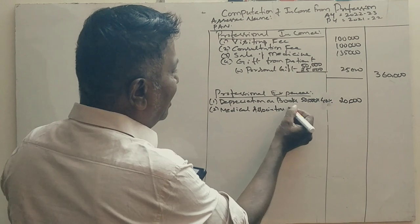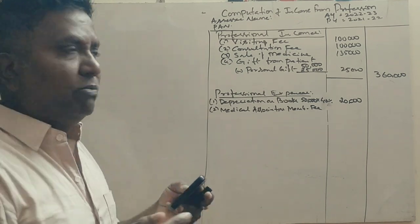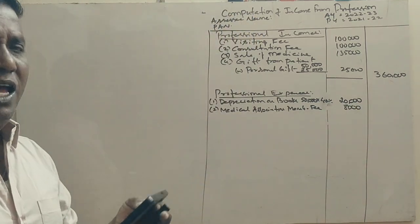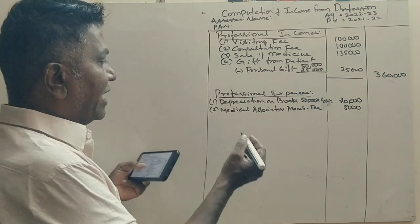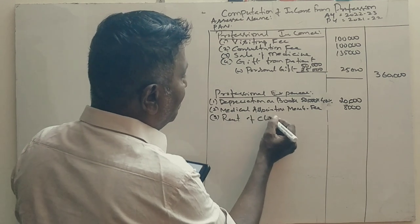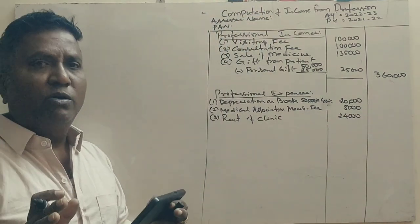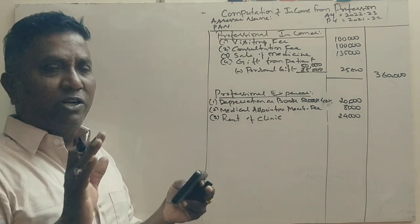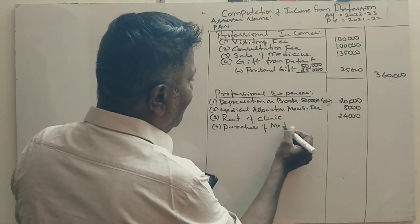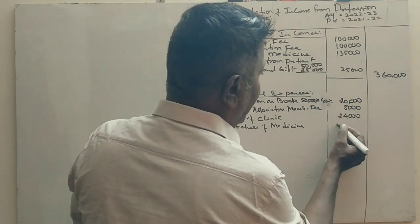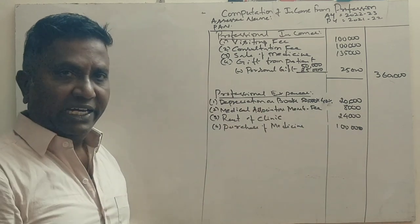Medical association membership fees are professional expenses — not personal expenses. Next, rent of clinic is definitely a professional expense: 24,000 rupees. Income tax is a personal tax, so it is not allowed as a professional expense. Purchase of medicine: sale is 1,35,000 and purchase is 1,00,000, so net income from medicine is 35,000.